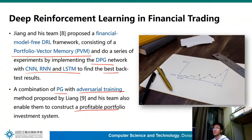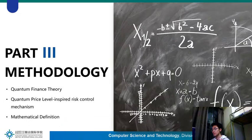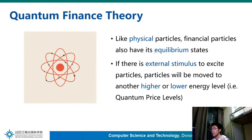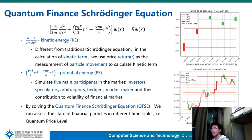I will now show you the methodology of our system. For quantum finance theory: like physical particles, dynamics of worldwide financial instruments can be modeled as financial particles. Therefore, financial particles also have equivalent energy states, and if there is external stimulus to excite particles, they will move to another higher or lower energy level. To calculate QPLs, we need to solve the quantum finance Schrödinger equation.